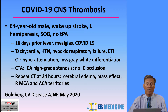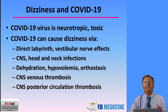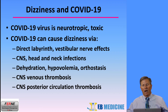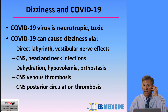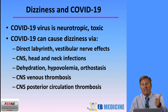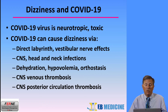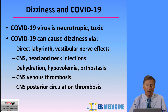Regarding dizziness and COVID-19, the virus is neurotropic and targets nervous tissue, most commonly found in the CNS and the gut. COVID-19 can cause dizziness via several mechanisms: direct labyrinthine or vestibular nerve effects causing unilateral dysfunction; CNS or head and neck infections; dehydration, hypovolemia, or orthostasis from poor fluid intake during illness; CNS venous thrombosis; and posterior circulation arterial thrombosis in the central nervous system.